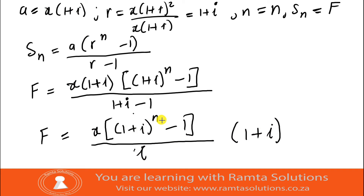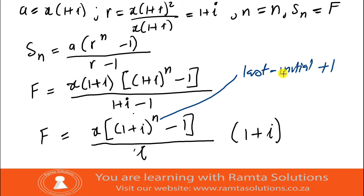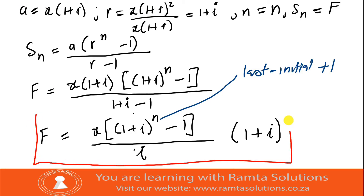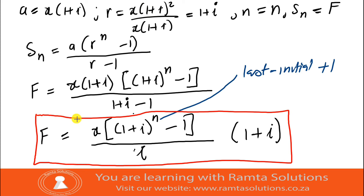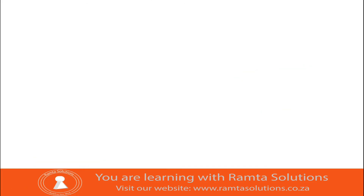Special note: this n, when using your timeline, equals last minus initial plus one — meaning the last time you make a payment minus the first time, plus one. This gives the number of installments. This is the formula to use when you are missing the last payment.